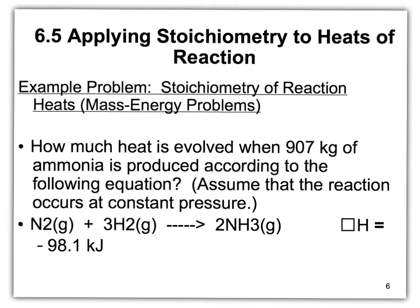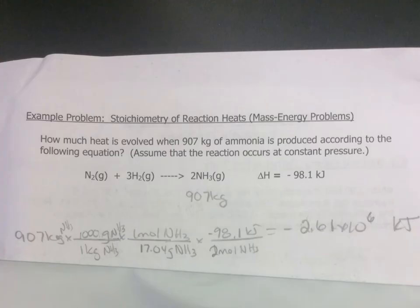Section 6.5 is just applying stoichiometry to heats of reactions, so it includes the type of problem we just did. This next problem gives you the balanced equation and tells you that you have 907 kilograms of ammonia, asking how much heat would be evolved — the same approach as the last problem.